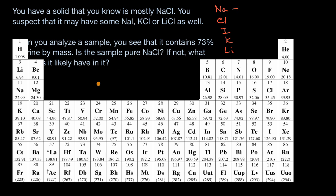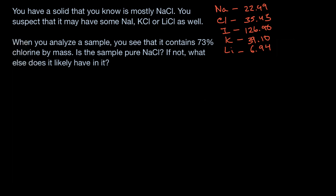Sodium's average atomic mass is 22.99, chlorine is 35.45, iodine is 126.90, potassium is 39.10, and lithium is 6.94. And so now I can remove my periodic table of elements.